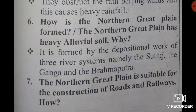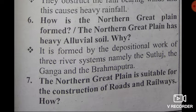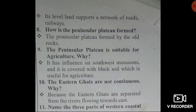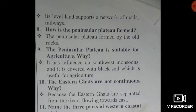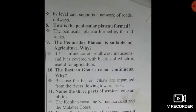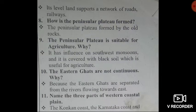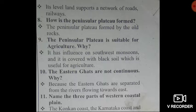Seventh question: The Northern Great Plain is suitable for construction of roads and railways. How? Its level lands support a network of roads and railways. Eighth question: How is the Peninsular Plateau formed? The Peninsular Plateau is formed by old rocks.